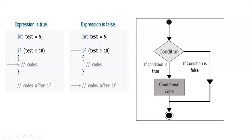You can see the diagram here — a flowchart. If the condition is true, it will execute the code. If the condition is false, control comes out of the body directly and exits. This is the starting point and this is the ending point.